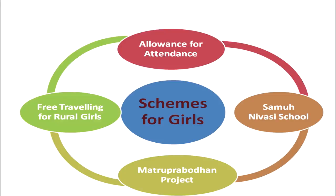Next are schemes for girls. For the improvement of girls' education in the state of Maharashtra, different schemes had been launched. These schemes mainly included the allowance for attendance, Samohunivasi schools, Matriprabodhan project and free travelling for the rural girls. These are the major schemes which had been launched by the state of Maharashtra for the upliftment of girls' education in the state.